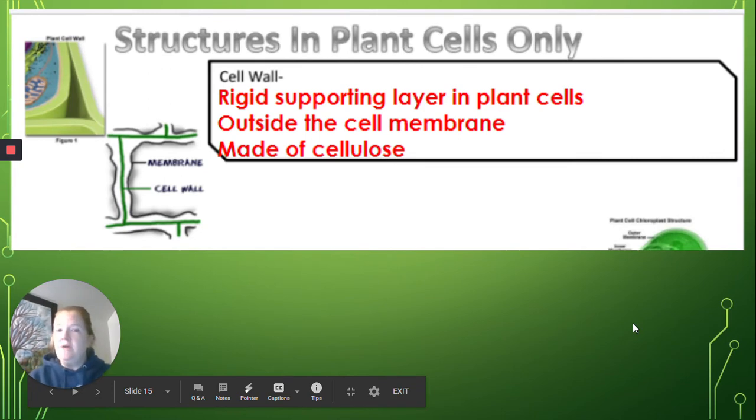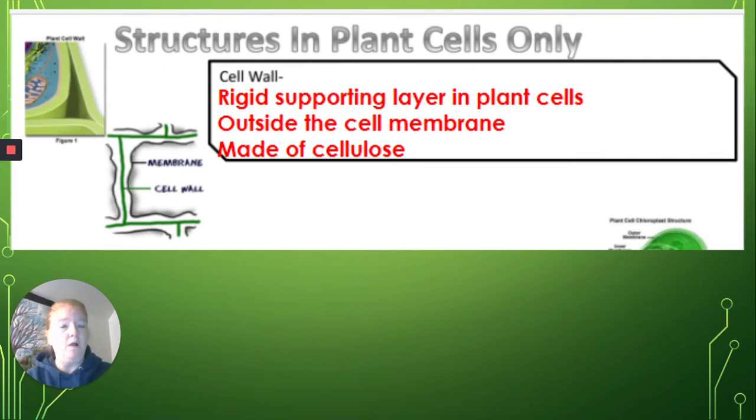A structure that is found only in a plant cell, one example, is a cell wall. And that is a very rigid supporting layer around the outside of a plant cell. It's made of cellulose, and it really gives the plant cell structure and support in a way that animal cells do not have.